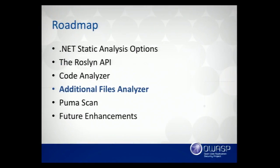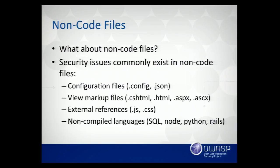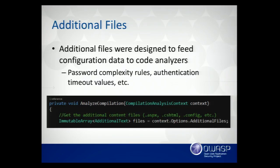Code analyzers are good, but we have lots of other areas needing attention too — non-code files. Security issues commonly exist in config files, JSON files, JavaScript files. We have view markup with raw writes to the screen, external JavaScript references, and even non-compiled languages — Visual Studio and VS Code on OSX now support Ruby and Python. It would be cool to run diagnostic rules against that stuff too. Roslyn out of the box doesn't really support this, but I'm a hacker by nature. I looked into the CompilationAction and found this object called additional files, which are the non-code files.